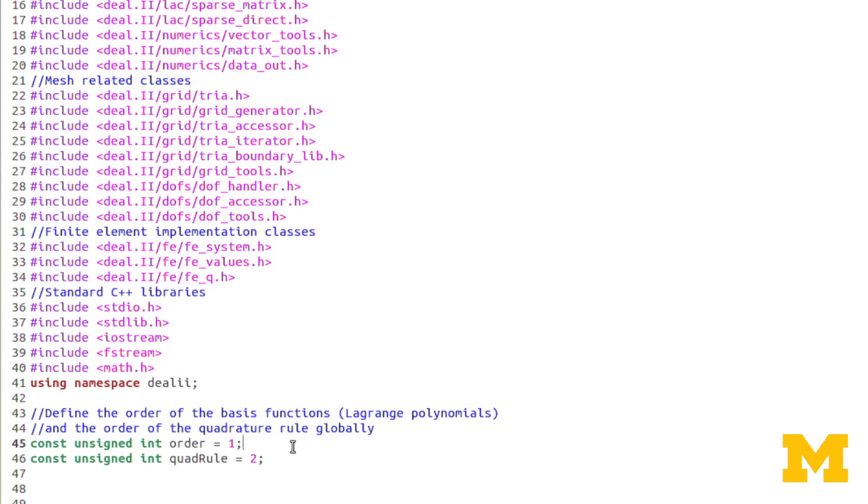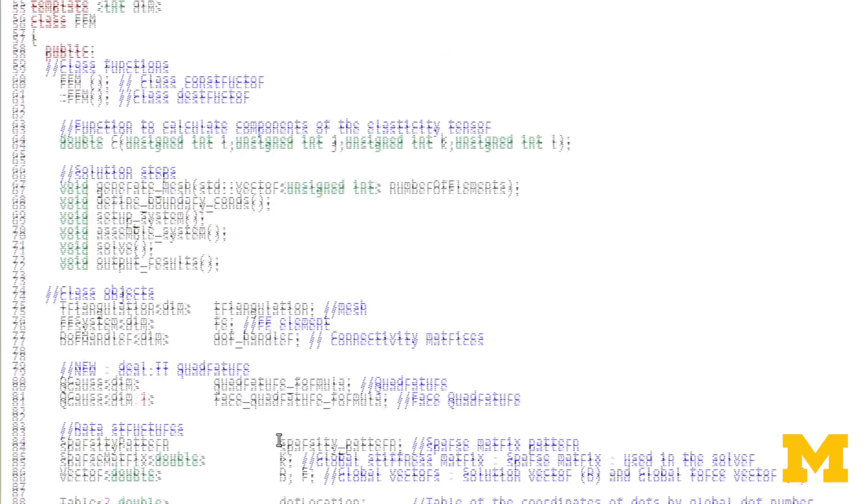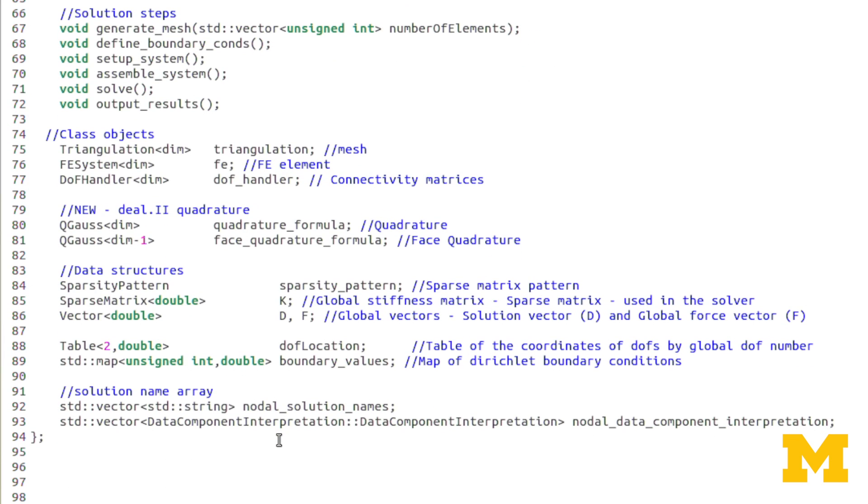First off, I'm going to declare order and quadrule as global variables. Actually not variables, they're constants. I've designated them both as constant integers. I've defined them here because I use both of these numbers in the constructor of some of our class objects. Let's scroll down and look at the declaration of objects in our class.